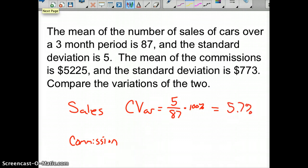Okay, and for the commission rate, C var for commission would equal 773 for your standard deviation over $5,225 times 100% is equal to 14.8%.